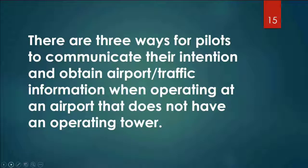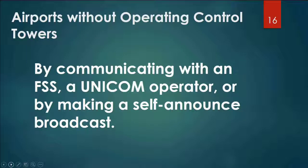There are three ways for pilots to communicate their intention and obtain airport traffic information when operating at an airport without an operating tower: by communicating with a flight service station, a Unicom operator, or making self-announced broadcasts. At times when you'd have an FSS, you could talk to them, but that's not going to be very common.